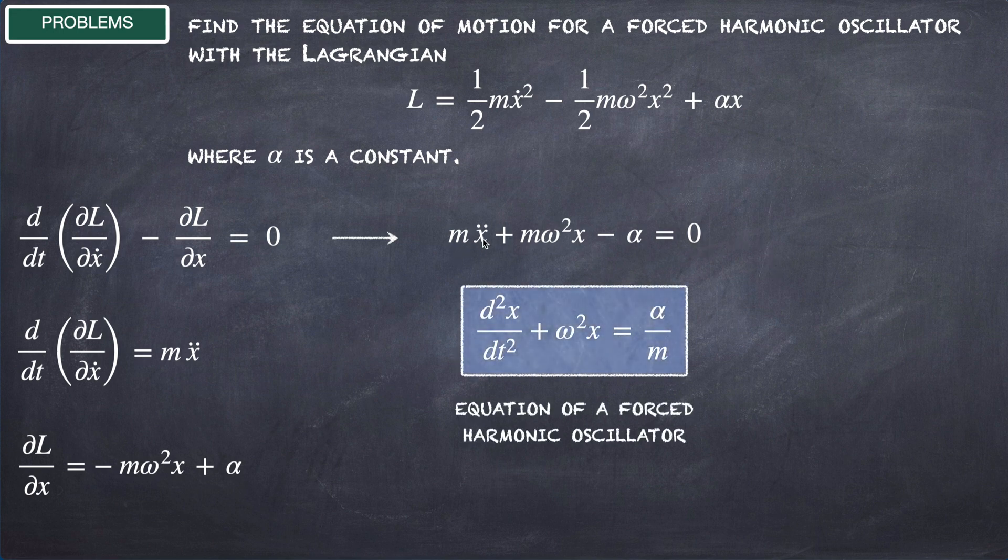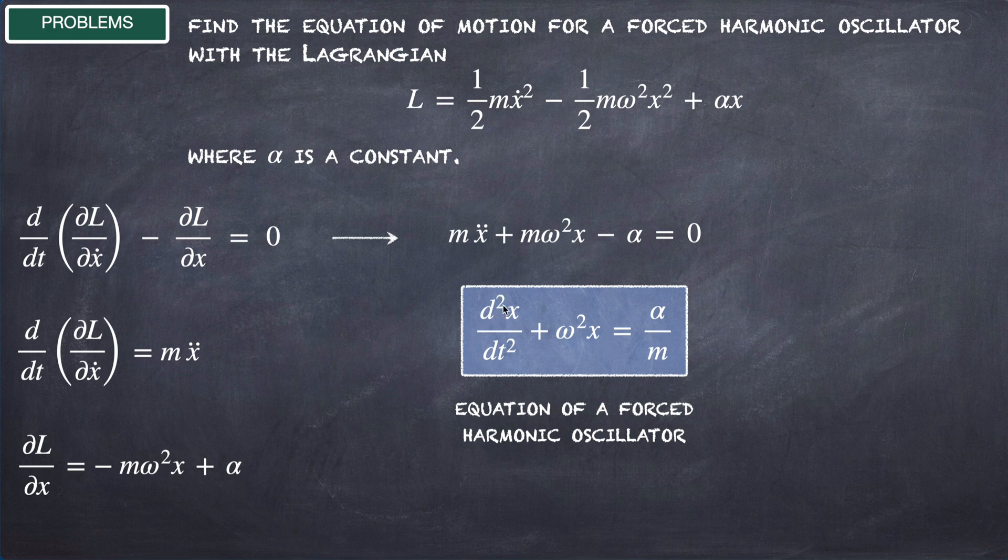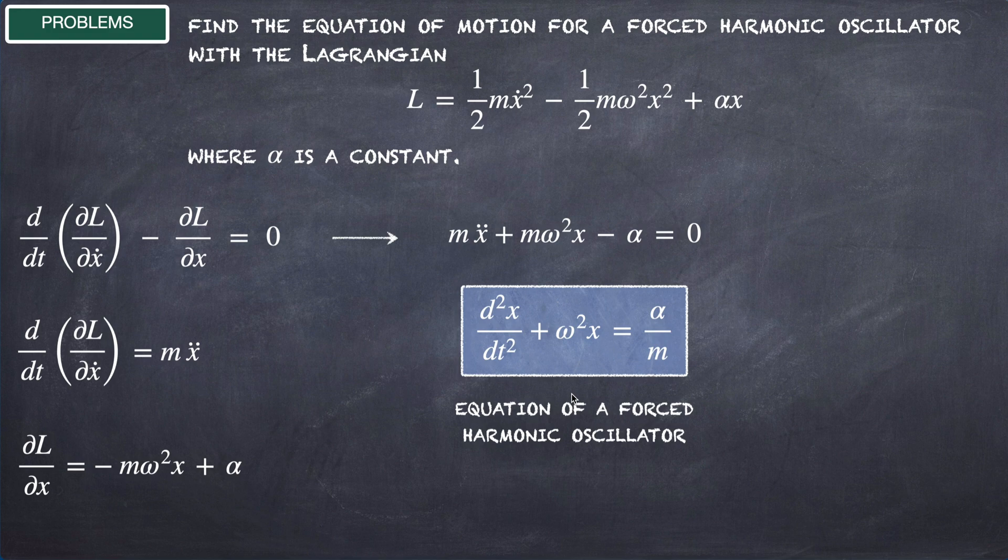If we divide this equation by m, we obtain d²x/dt² + ω²x = α/m. This is the familiar equation of motion of a forced harmonic oscillator.